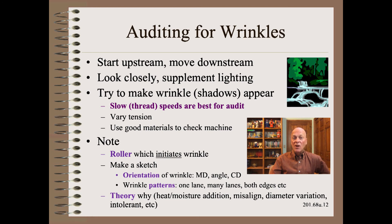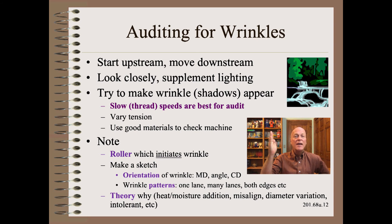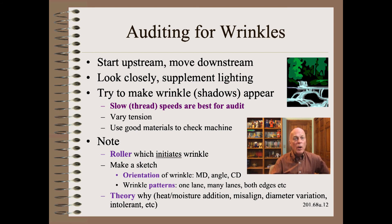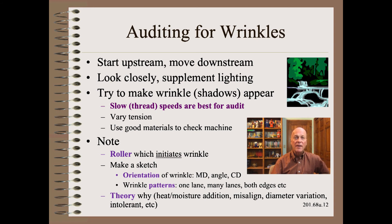Finally, in Web 101, we teach how to audit for wrinkles by starting upstream, where there are hopefully fewer wrinkles to sort out, and then moving downstream. Every wrinkle type and every wrinkle initiation location needs to have a separate diagnostic, because, as I've said, a wrinkle is not a wrinkle is not a wrinkle.